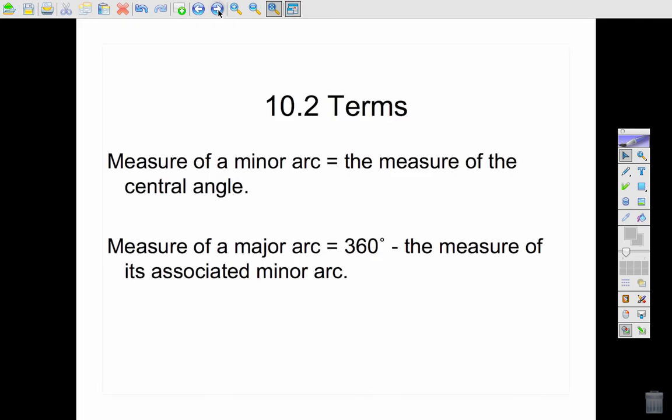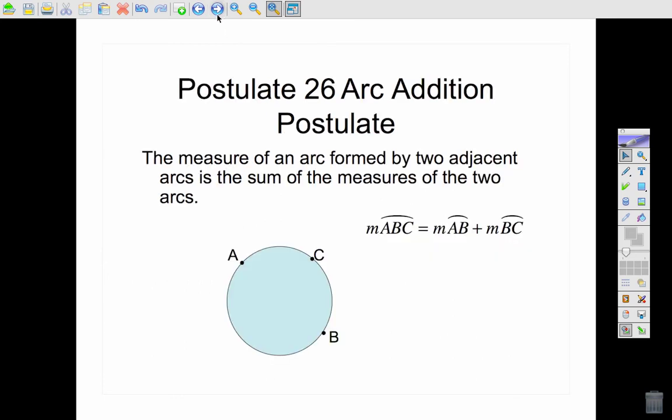Let's look at some theorems. The measure of a minor arc equals the measure of the central angle, and the measure of a major arc is 360 minus the minor arc. Get those down, and we'll look at some examples. Postulate 26, arc addition, very similar to the segment addition postulate, where the pieces make up the whole.